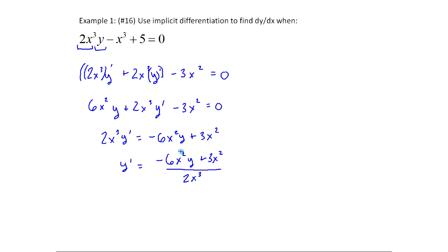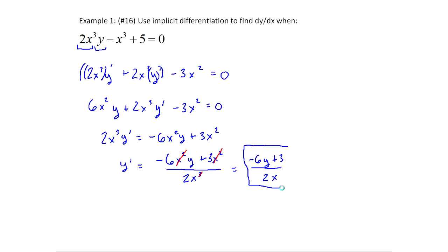Notice there's a factor of x² in everything. x³ is just x² times x, and we have x² in the numerator terms, so I can cancel. That leaves y prime equals (-6y + 3) / (2x). You could also factor out a 3, but that's a matter of style. There's our final answer. Notice I still used the product rule and took the derivative normally, but when I hit a y, I had to apply the chain rule automatically, because we don't know how y is written in terms of x exactly.